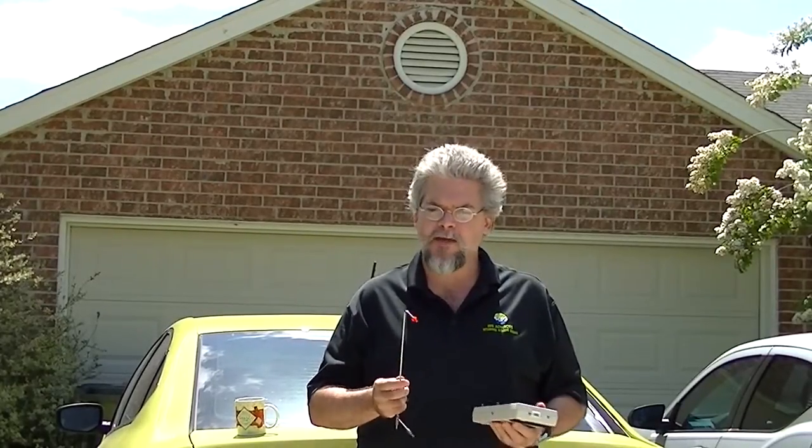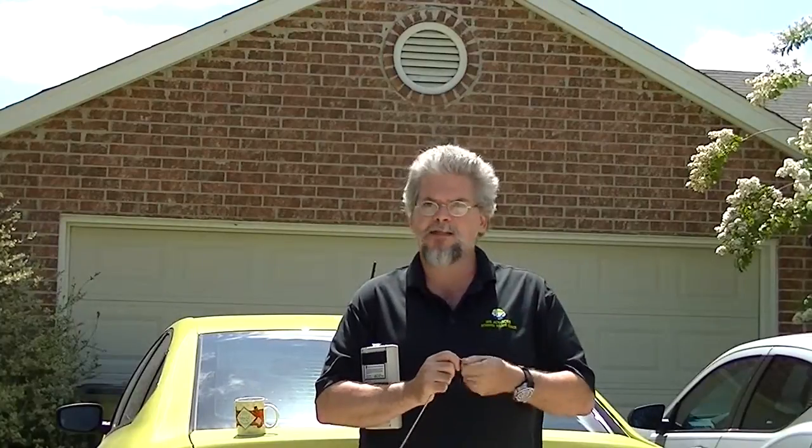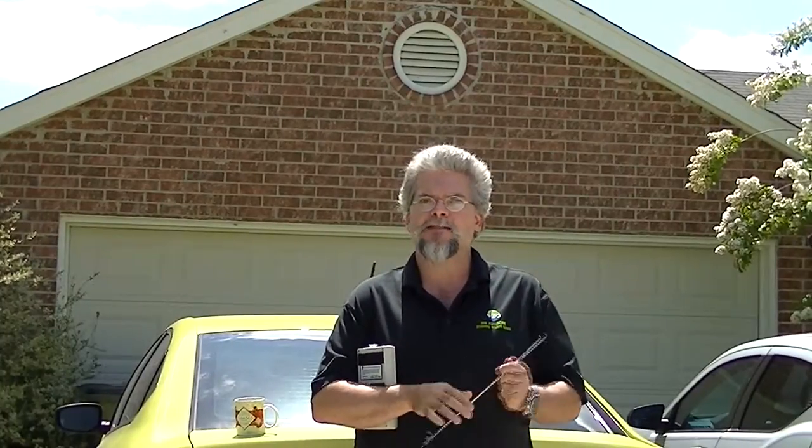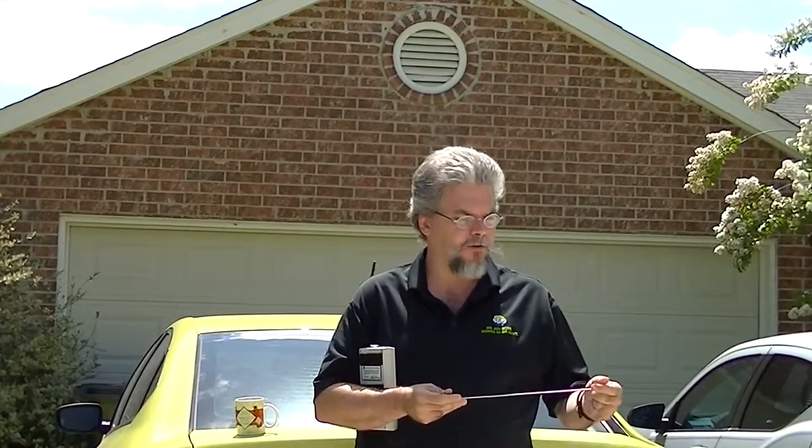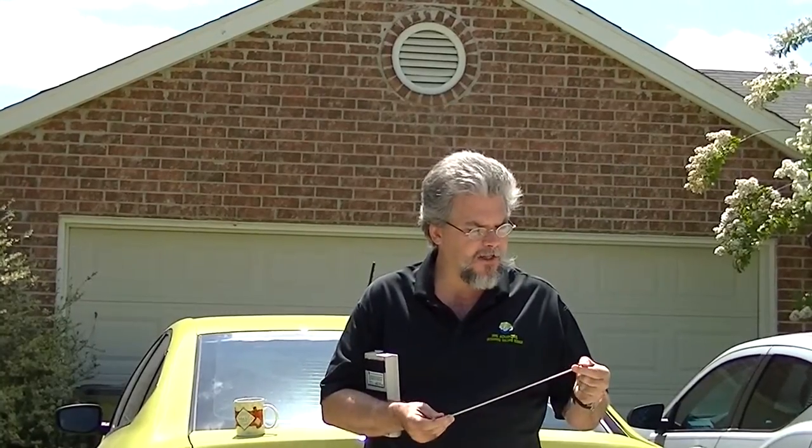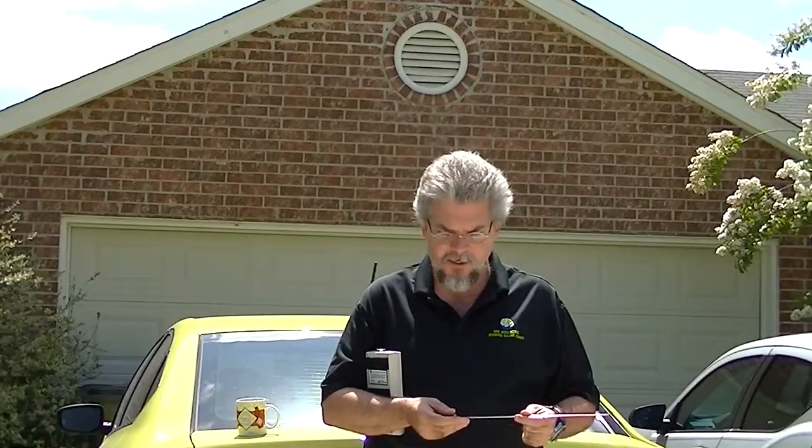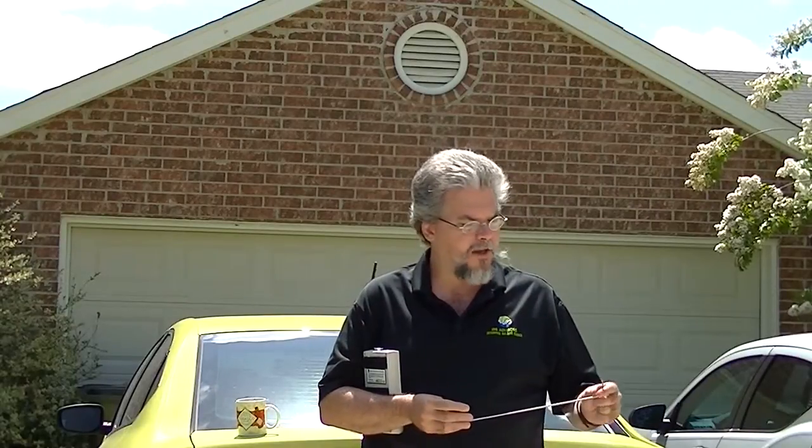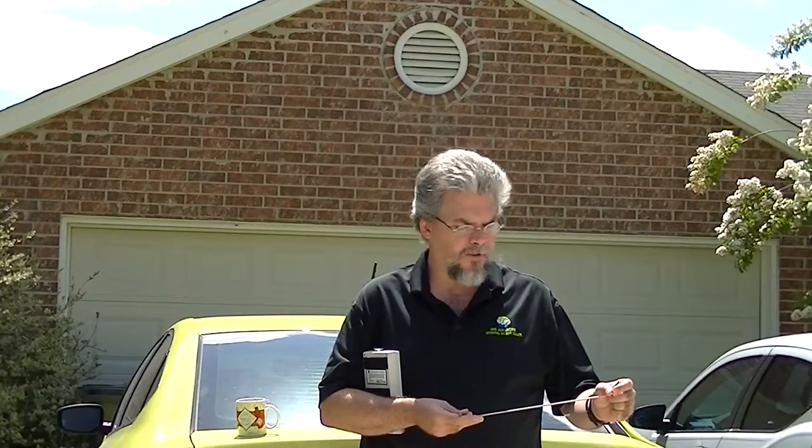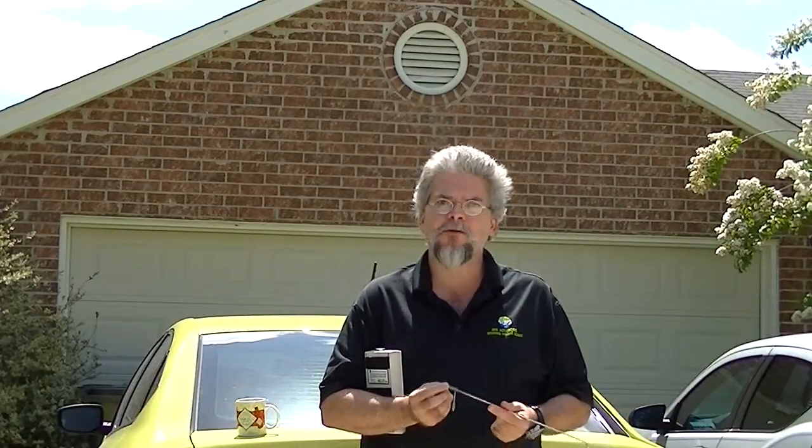This pitot tube is basically a static pressure pitot tube and a stagnation pressure pitot tube combined. It has little tiny holes along the sides that connect to this pressure tap, and a hole inside the tip like a stagnation pressure probe that connects to this tap.